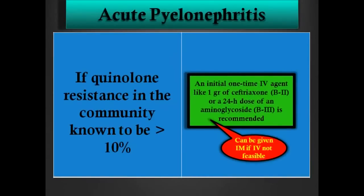If resistance in the community to quinolones is known to be more than 10%, we should not use them empirically, or if we choose to use them until we have the urine culture, we should also give an initial dose. This B2 recommendation is based on prospective studies, not randomized controlled trials — the level of evidence is not so high. Of course, if you cannot give it IV, you can give it intramuscularly, though this is not highly recommended because of the risk of abscesses or hematomas.